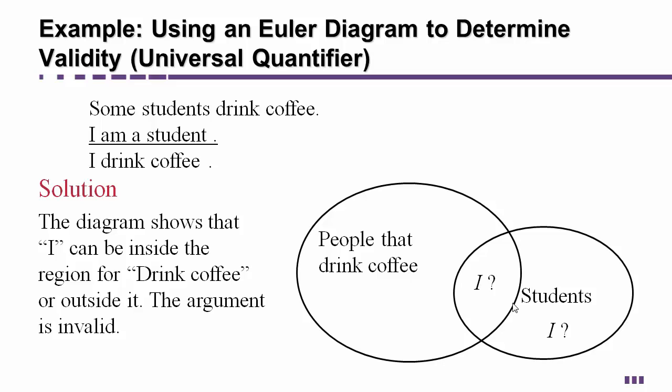When it says I am a student I could be anywhere in the student shape. I could be out here but I could also be in the football. It could be that I drink coffee but it could be that I am out here and I don't drink coffee. Again it doesn't force the last thing to be true therefore invalid argument.